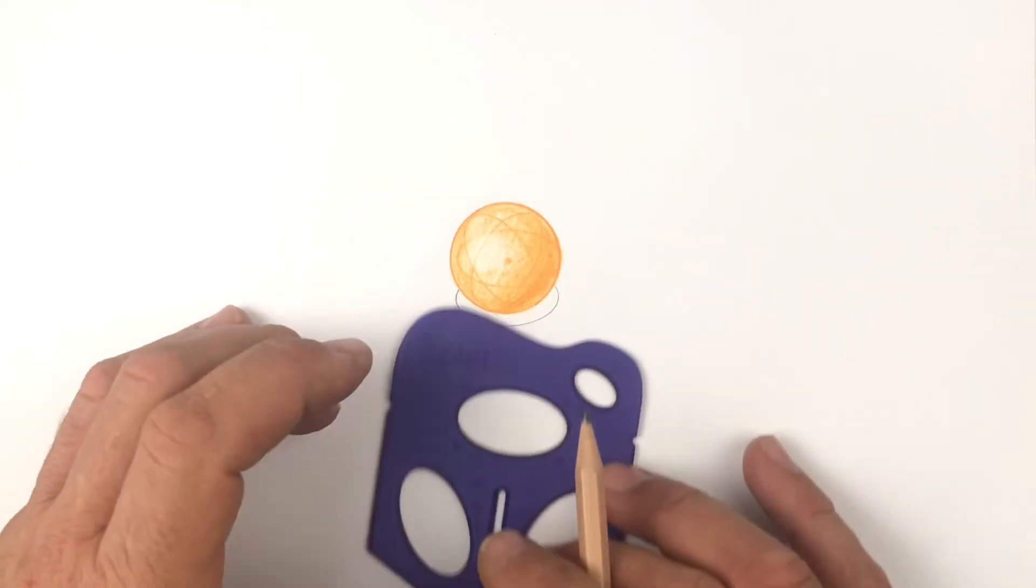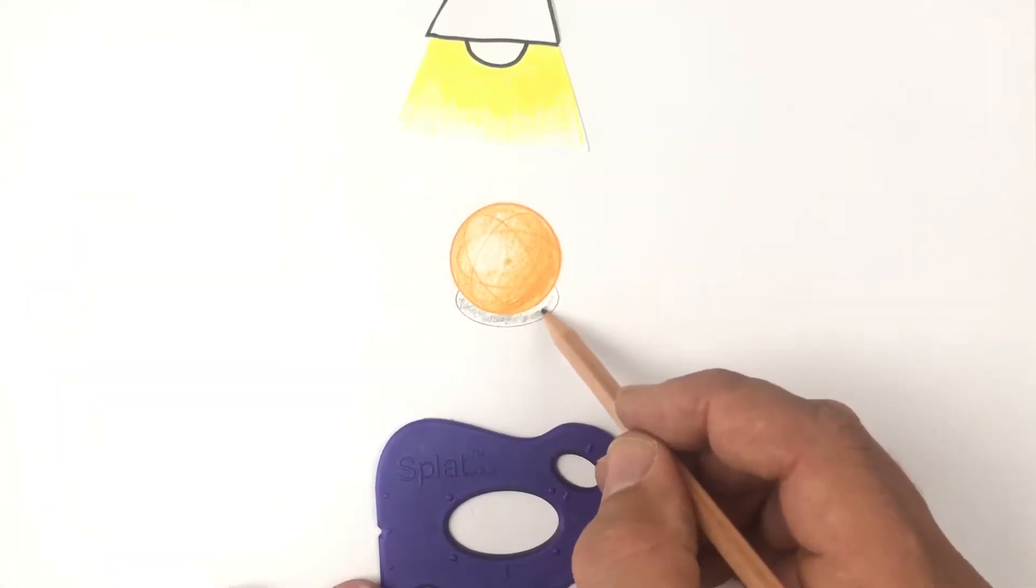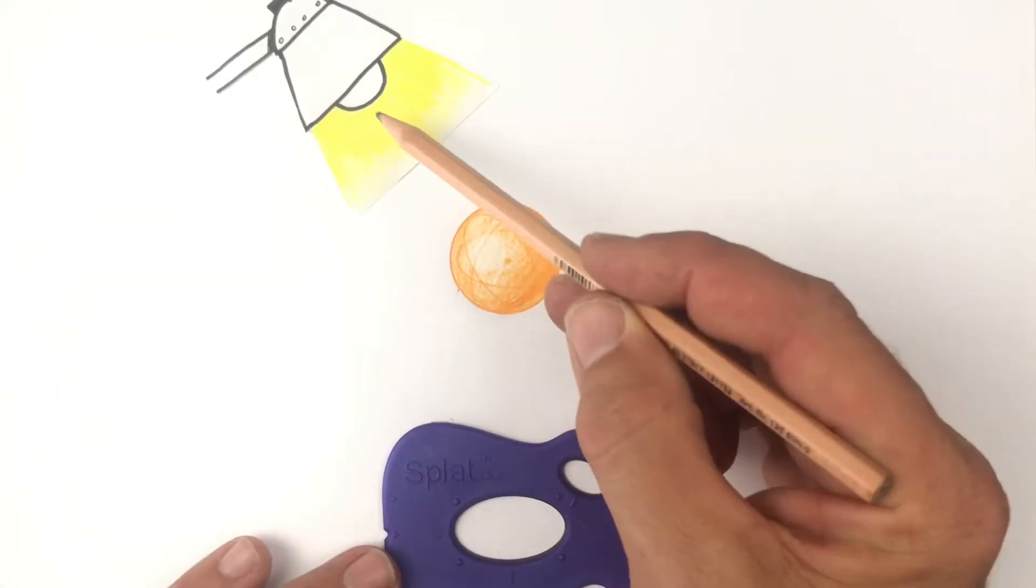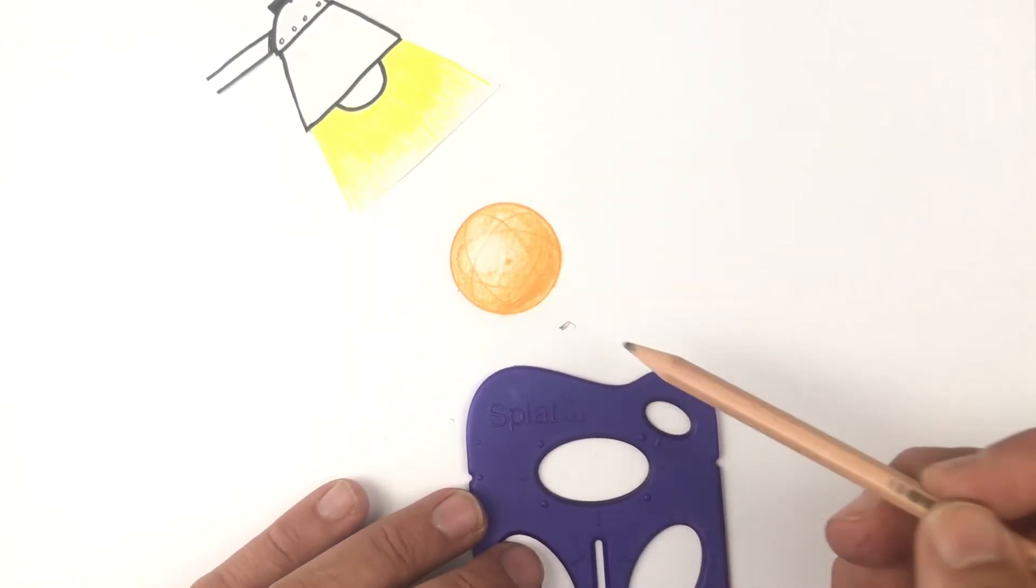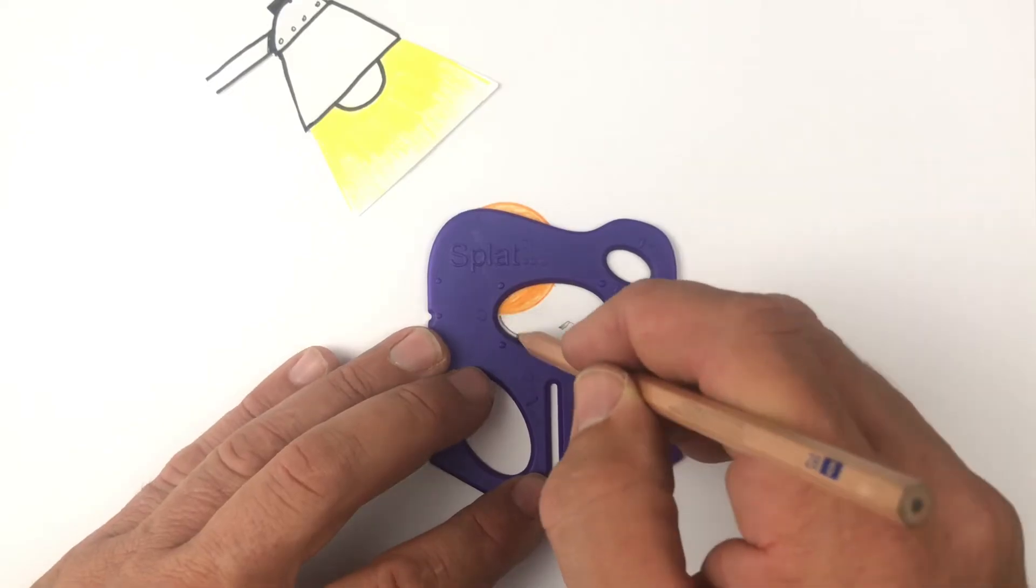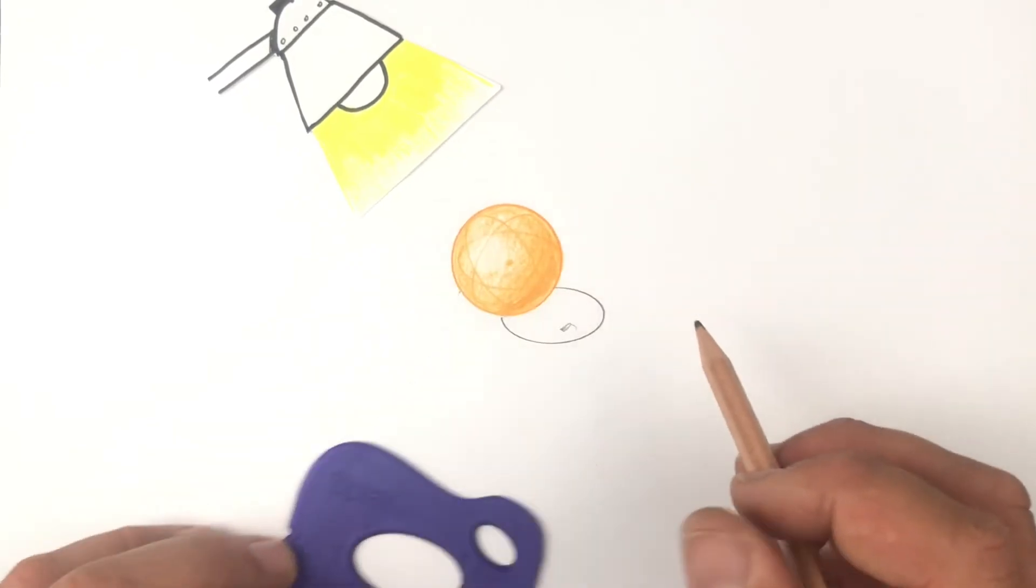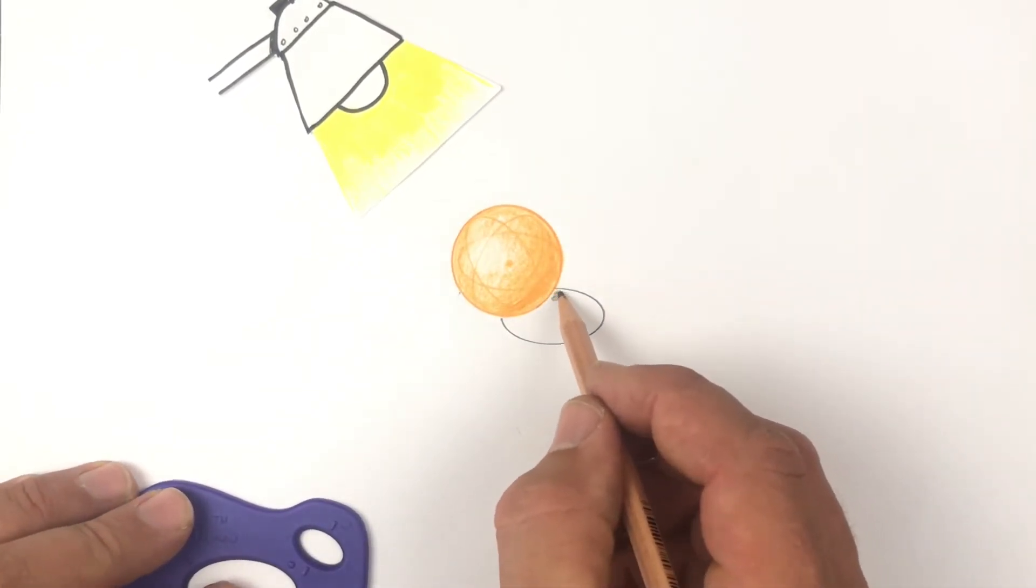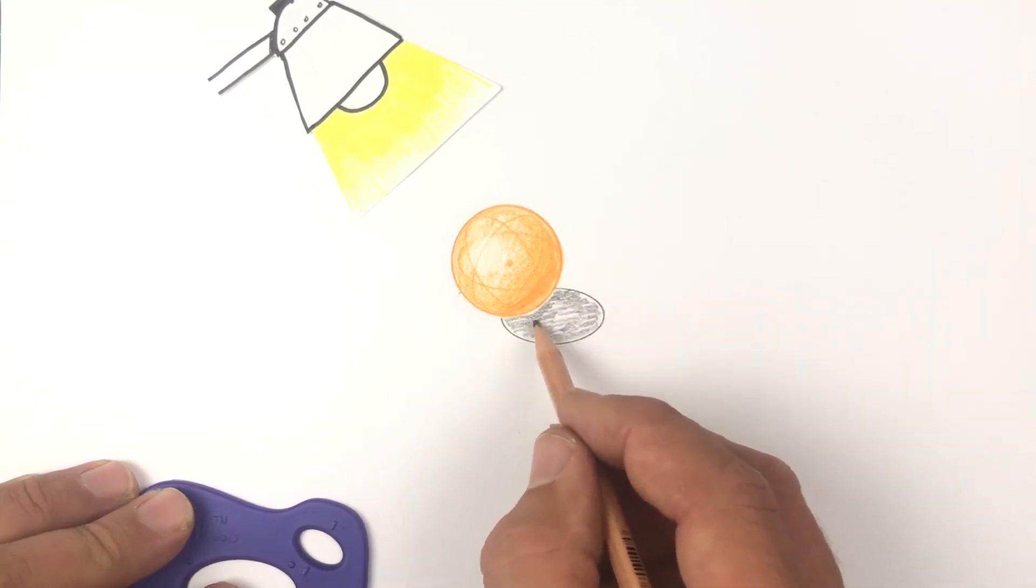Here's the position of the shadow if the light source was directly above the sphere. If on an angle, follow through the object and find the shadow will sit offset like that. Give it a nice, even shade and the shadow really helps it look like it's a 3D object.